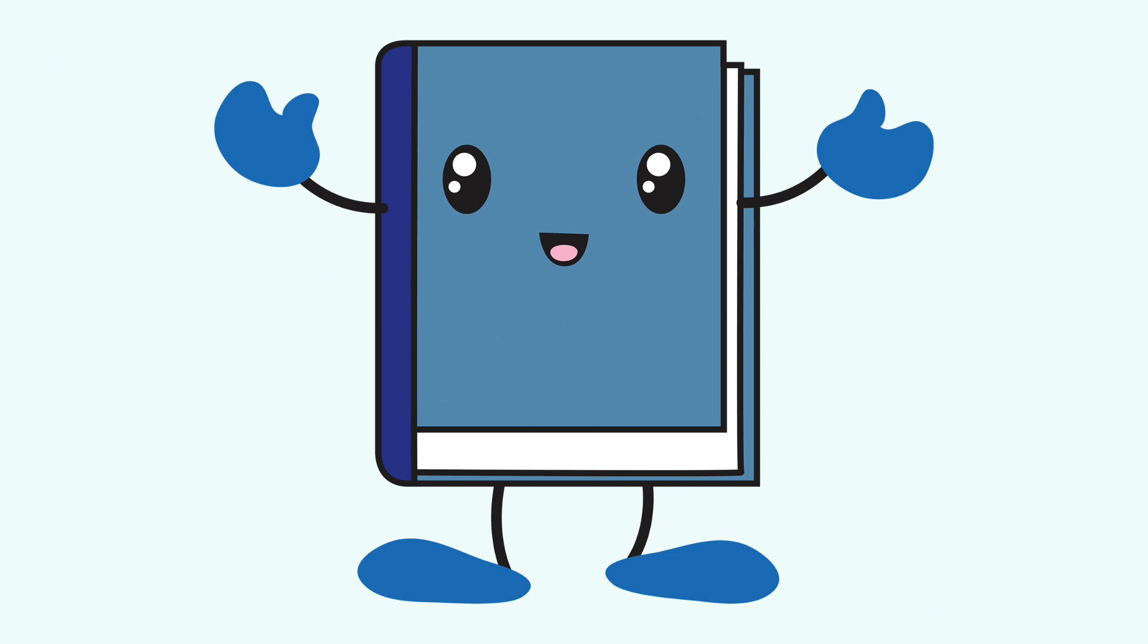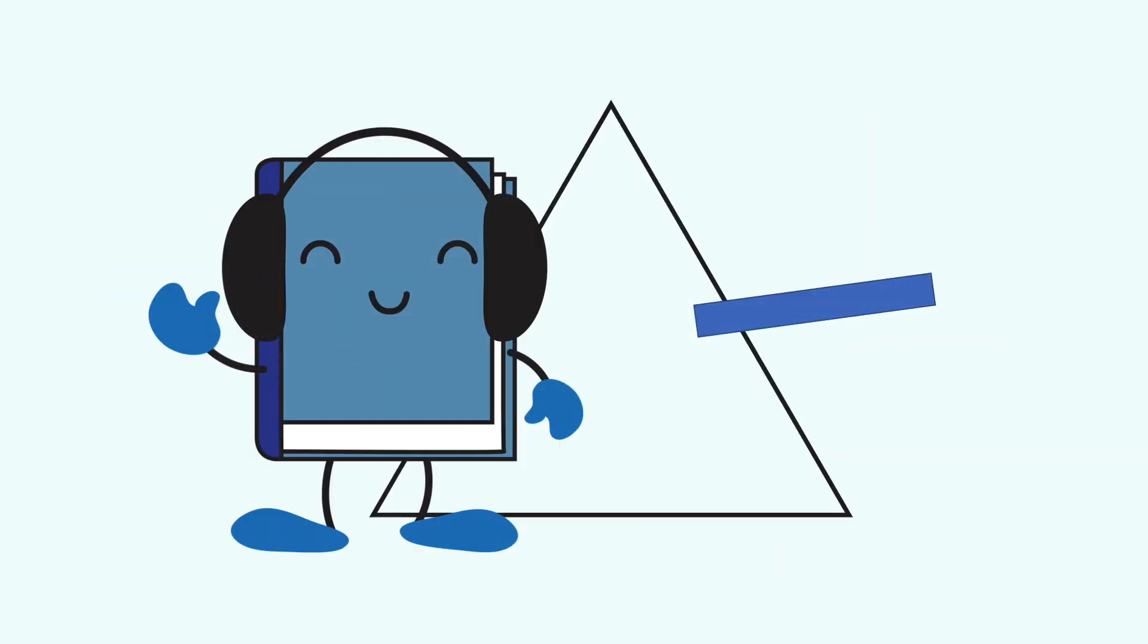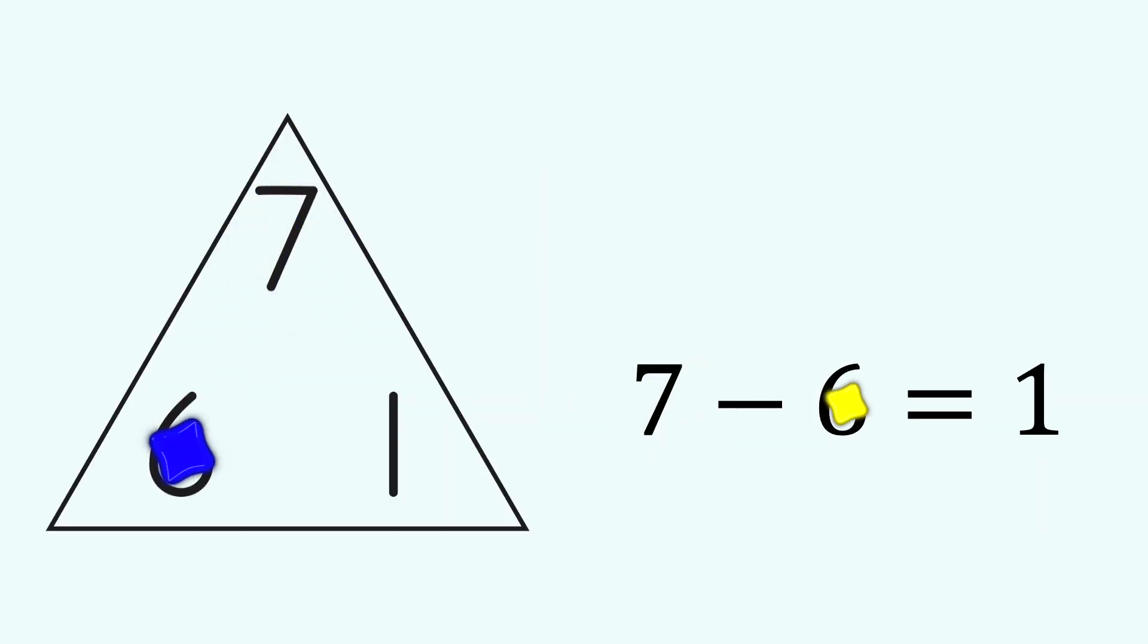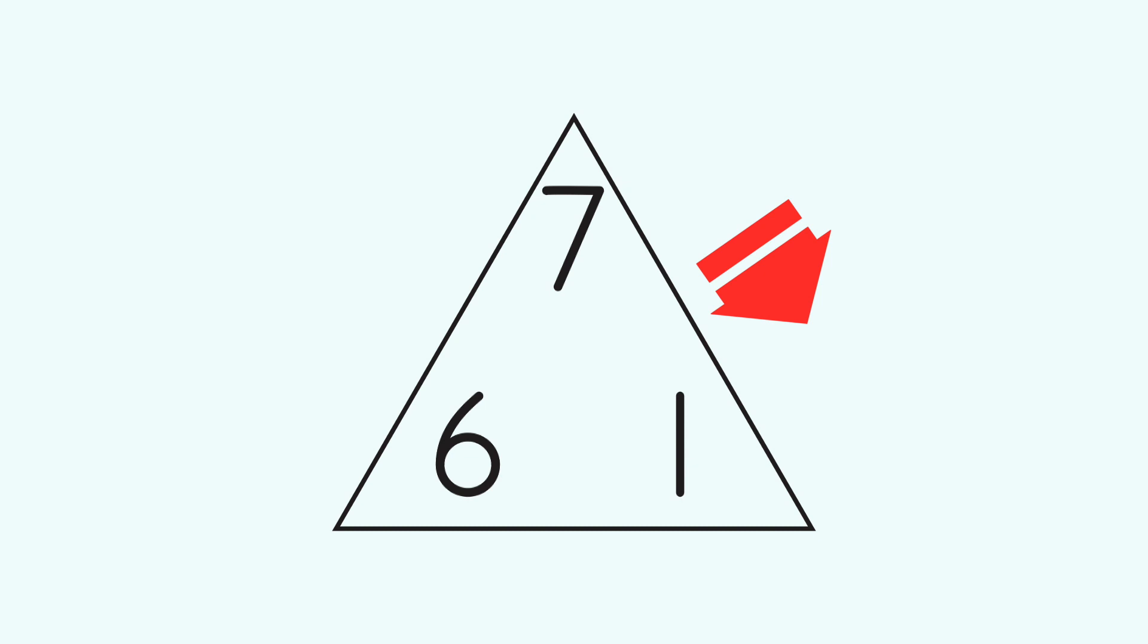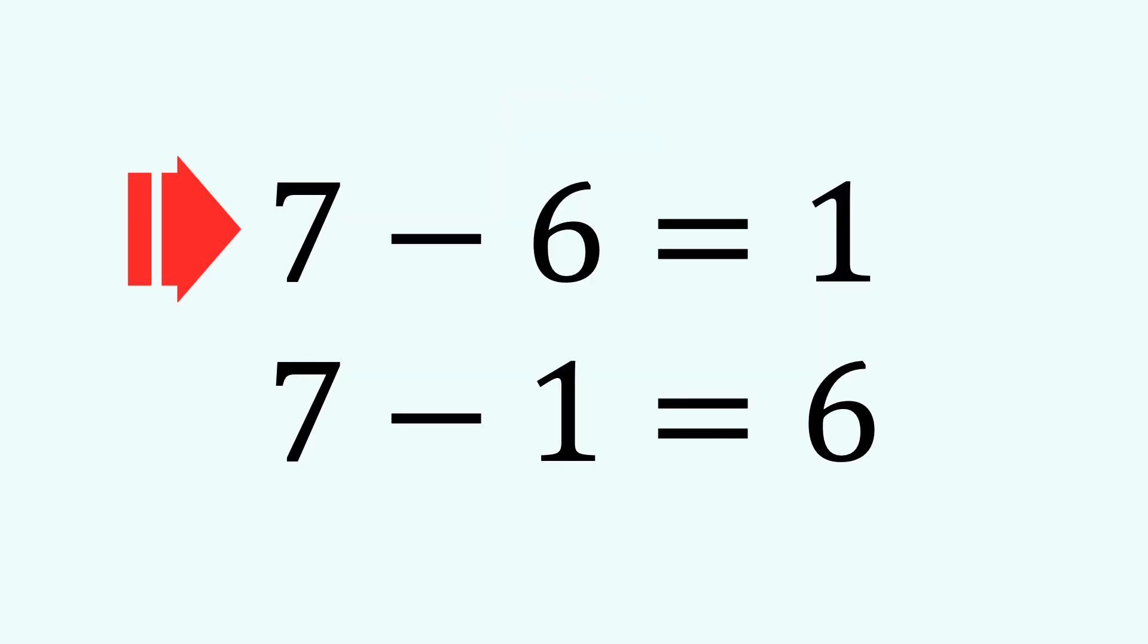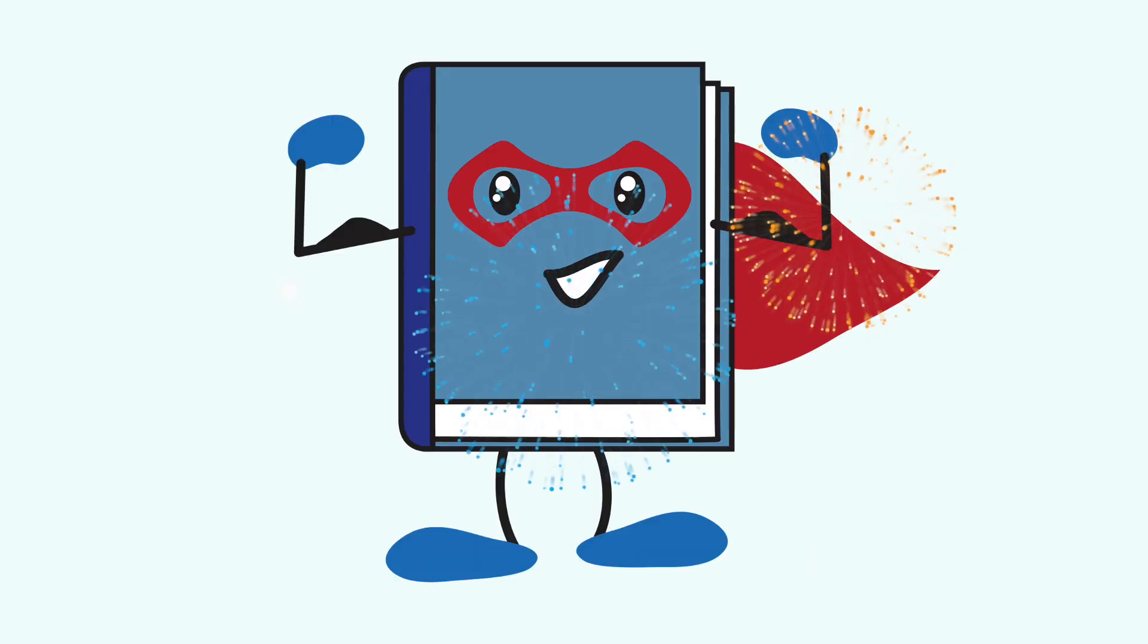Next, let's try subtraction. Start at the top, go down and over. 7 minus 6 equals 1. And go down the other way. 7 minus 1 equals 6. There's our two subtraction facts: 7 minus 6 equals 1, and 7 minus 1 equals 6. Fantastic work.